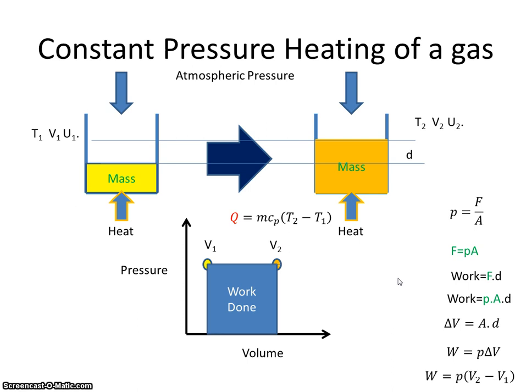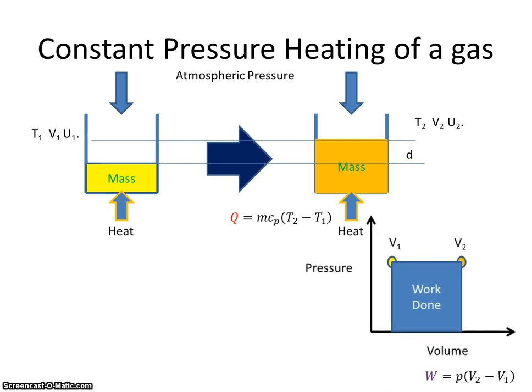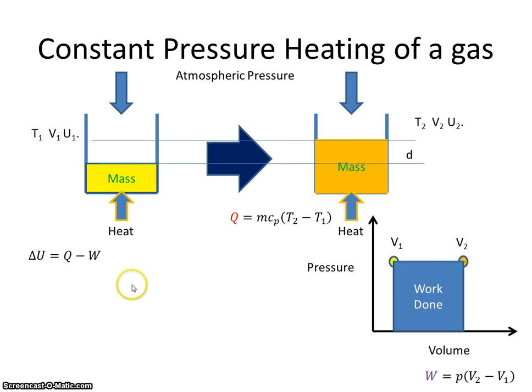Why does that help us? Well, it helps us because in a system that obeys the first law of thermodynamics, the change in internal energy is equal to Q minus W. And we've just seen that the work done is the pressure times the change in volume. So the change in internal energy, U2 minus U1, is equal to the heat supplied minus the work done. Well, the heat supplied is this expression here, and the work done is this expression.